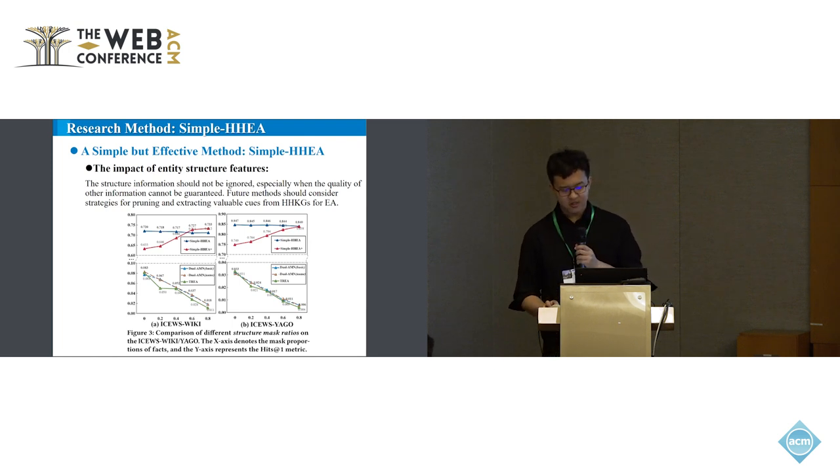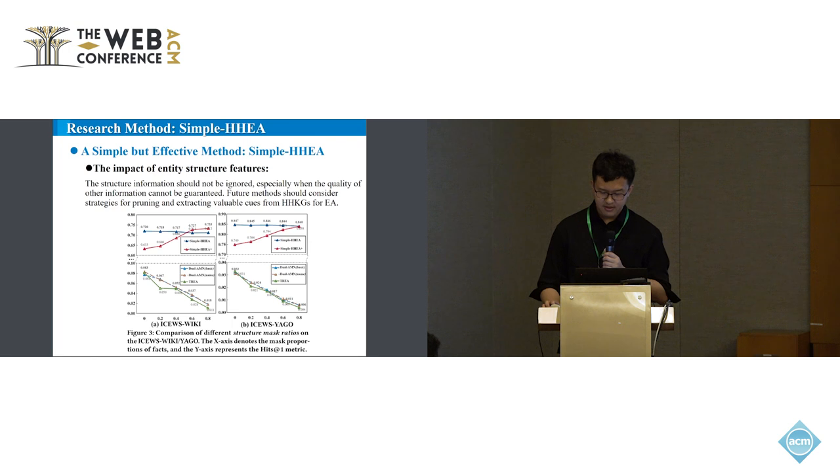Specifically for structure features, to ponder how structure information affects EA on HHKGs, we select Simple HHEA, then randomly mask ratios of facts in KGs to mimic different graph structure conditions. For Simple HHEA, with the mask ratio of graph structure gradually increasing, temporal information is lost. It was noting that as the mask ratio of structure information increases, the performance of Simple HHEA+ improves. After mask ratio of 60%, Simple HHEA+ even outperforms the basic version.